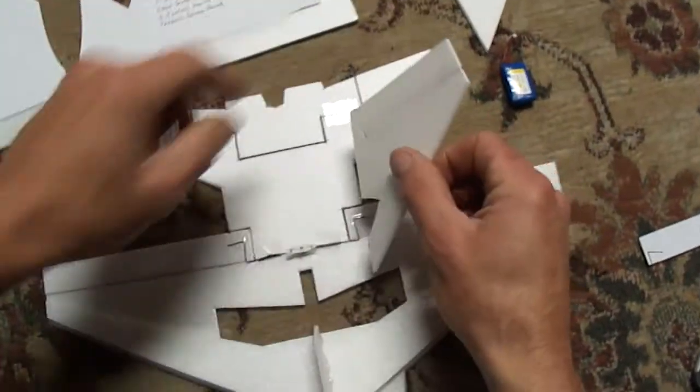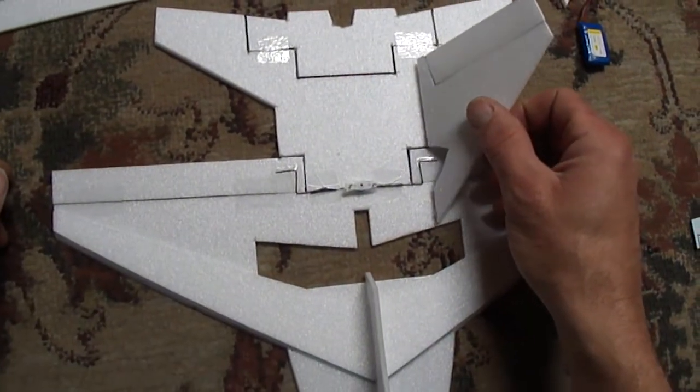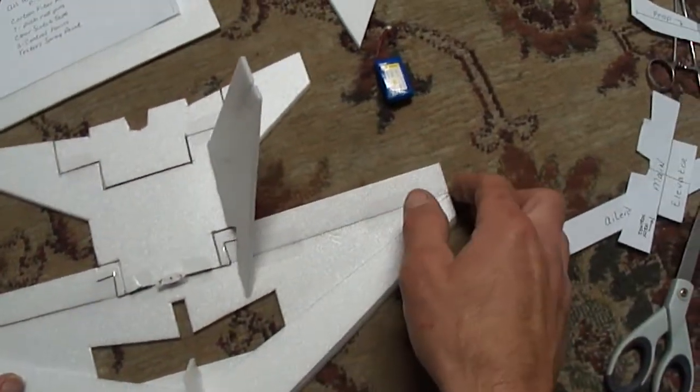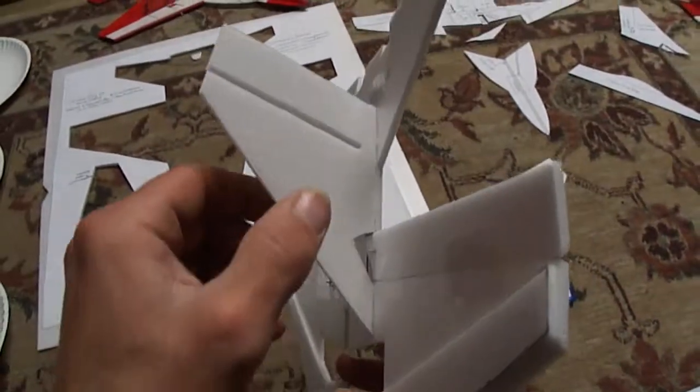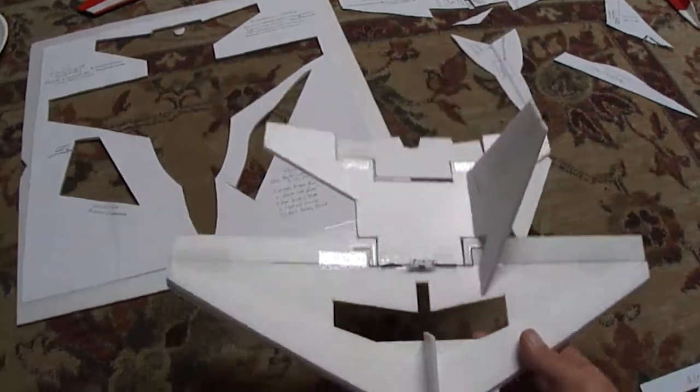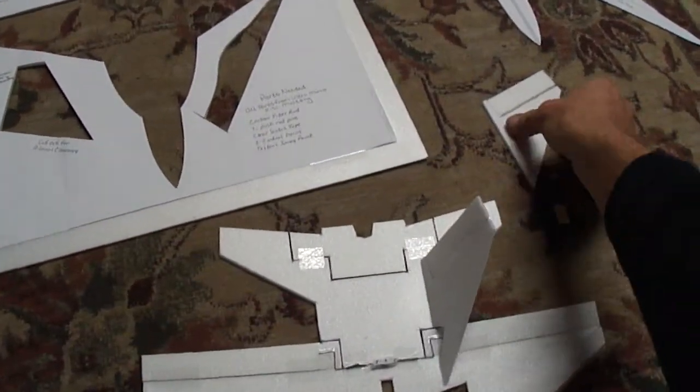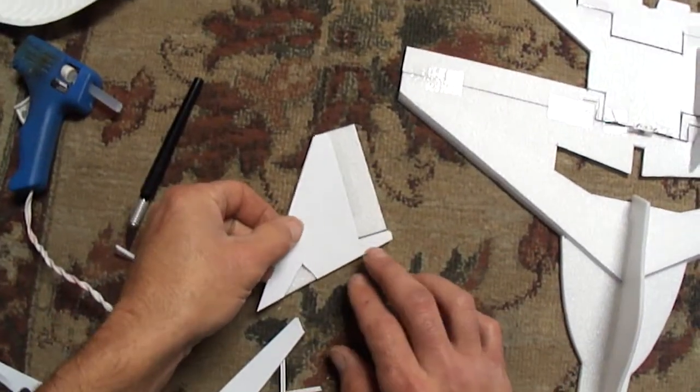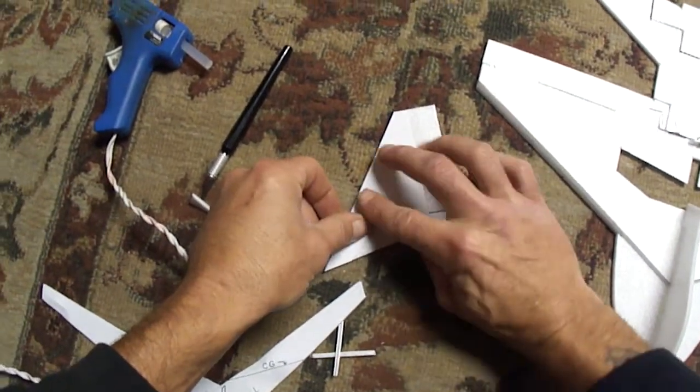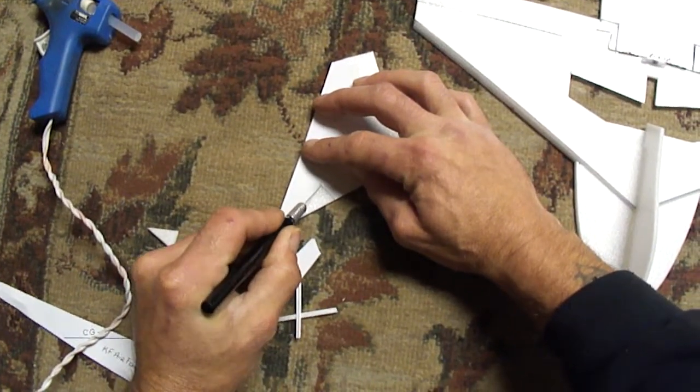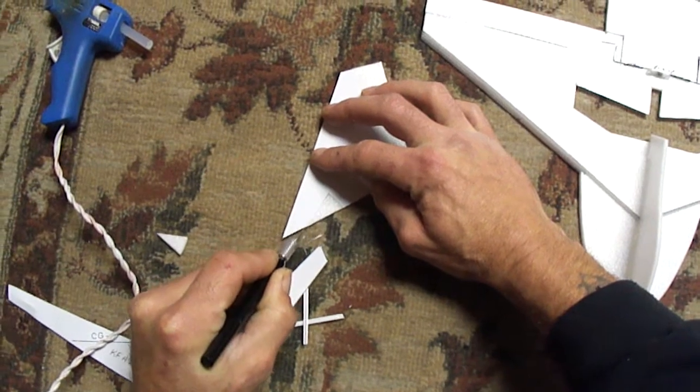You got tail stabilizer fins, I just center them over the aileron, line them up with the body. Again to get that notch out of there. Use your plans.